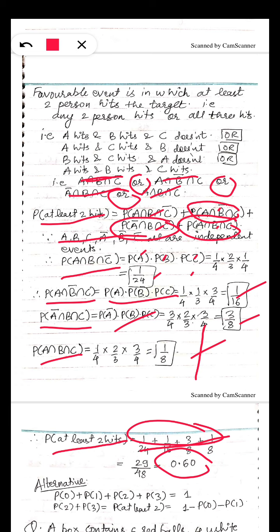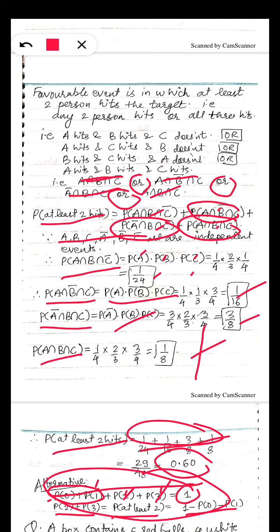An alternative approach: since all probabilities sum to 1, we have P(0) + P(1) + P(2) + P(3) = 1. We want at least two hits, which is P(2) + P(3). So P(2) + P(3) = 1 − P(0) − P(1), where P(0) is no one hits and P(1) is only one person hits. This is another way to solve the question.